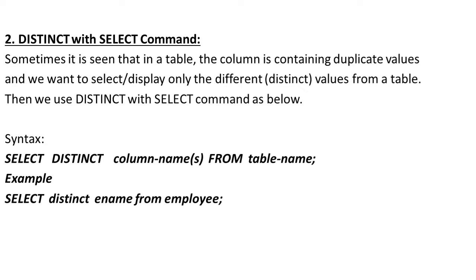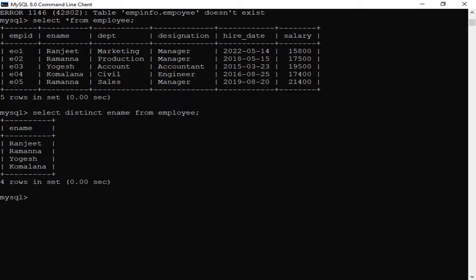For example, if in the e-name column the name 'Saurav' appears in the first row, third row, and fifth row — that is repetition. When you use the DISTINCT command, if you write SELECT e-name FROM table, it will display 'Saurav' only one time instead of three times. The syntax is: SELECT DISTINCT column_name FROM table_name semicolon. For example: SELECT DISTINCT ename FROM employee semicolon.